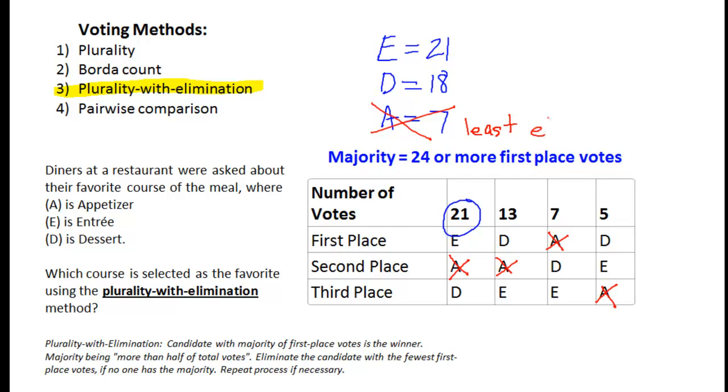Now I'm only left with entrees and desserts because the one with the least got eliminated. Now that we've eliminated appetizers it really gives us a slightly different table. This D right here, this dessert right here, actually moves up to a first place and this entree right here moves up to a second place. Same thing with this entree moves up to a second place and this dessert here moves up to a second place. There's really no more third place at all because we're only comparing two candidates here, no longer three.